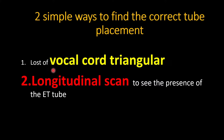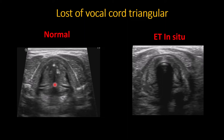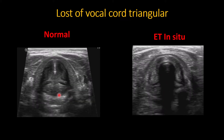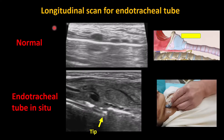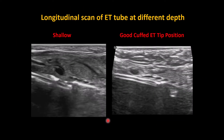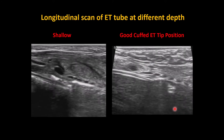There are two simple ways to confirm correct endotracheal tube placement: the loss of the vocal cord triangle and the longitudinal scan. At the thyroid cartilage level, you normally see two vocal cords moving symmetrically. When the tube is placed into the trachea, there is no longer movement, and you see the round structure of the ETT. In the longitudinal scan, you would normally see just one line — anything beyond that is air. If you see a tubular structure, that represents the ETT, and you can even assess whether the tip position is too high or in a good position.